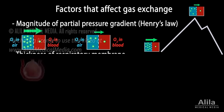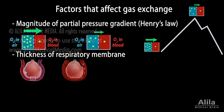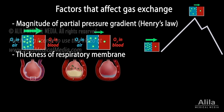Another factor is the thickness of the respiratory membrane — the thinner the membrane, the faster the gas diffuses. Diseases that cause pulmonary edema, such as pneumonia or left-sided heart failure, increase the thickness of the respiratory membrane and hinder gas exchange.